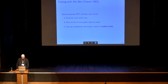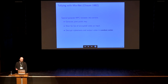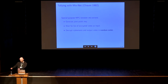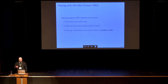David Chaum came up with a beautiful idea called MixNet. The idea is to use multiparty computation to distribute trust and provide privacy. The servers generate a joint public key, accept a list of ciphertexts, and decrypt and output the plaintext in random order. It's like when you're a kid running an election with a hat — you fold pieces of paper, write your candidate, put them in the hat, shake it, turn it upside down, and unfold all the pieces of paper. That's your election.